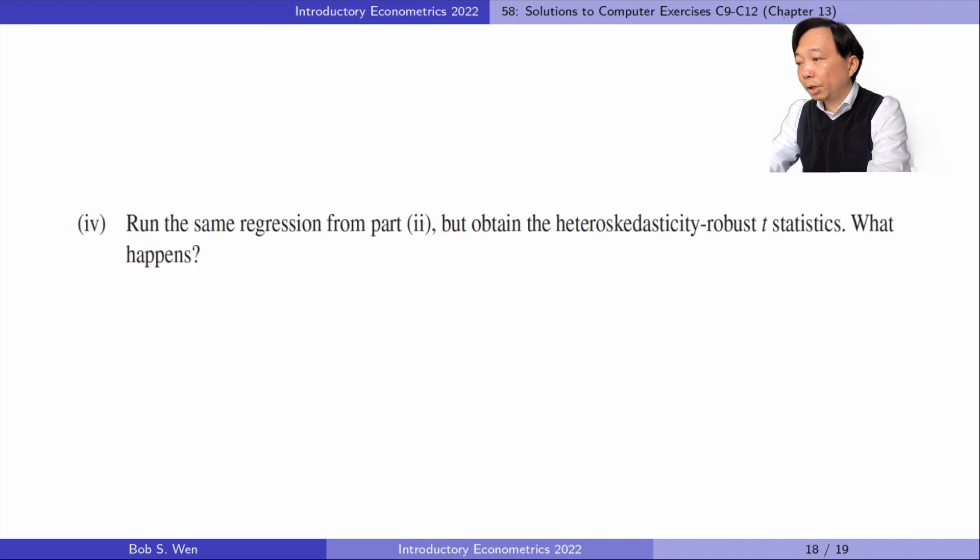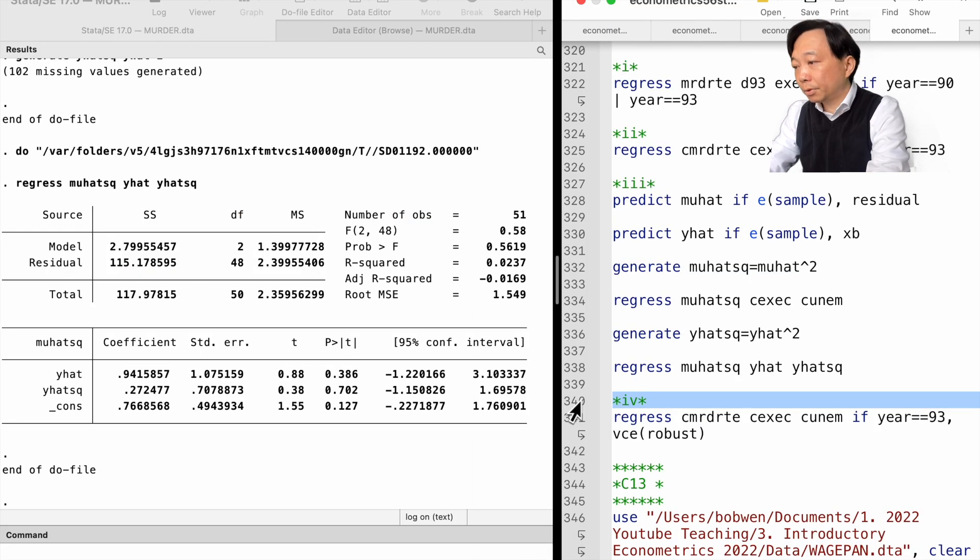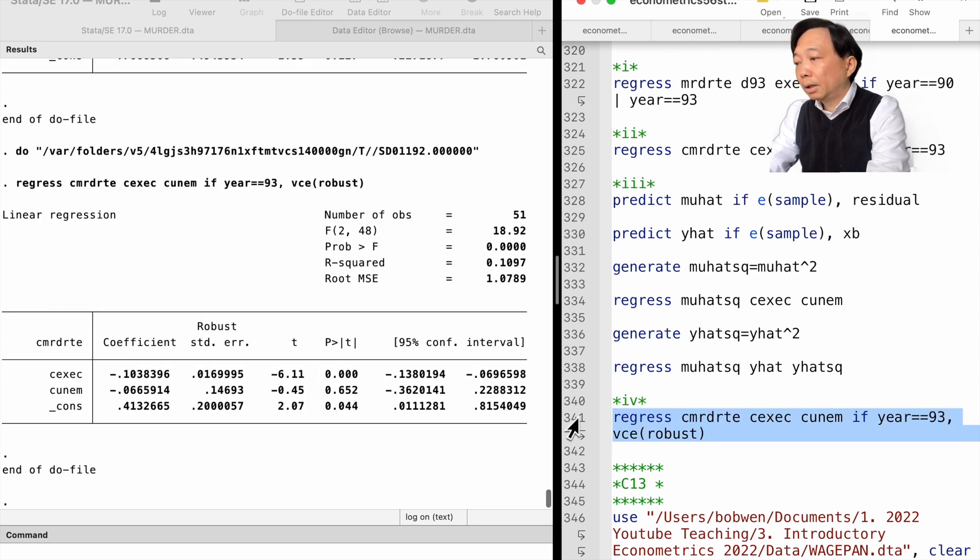In part 4, we run the same regression from part 2 but obtain the heteroscedasticity robust t-statistics. What happens? The heteroscedasticity robust standard error for the execution variable is smaller than the usual standard error, resulting in a more significant deterrent effect of capital punishment on the murder rate.